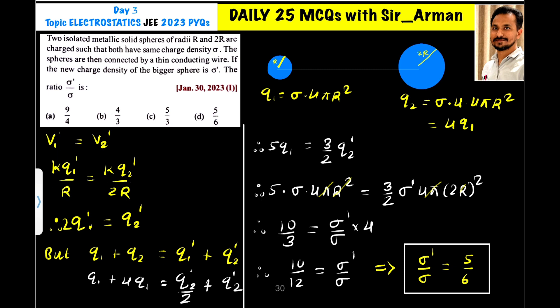Due to charge conservation, the total charge of the system remains conserved. So initially q1 plus q2 equals final charge q1 dash plus q2 dash.